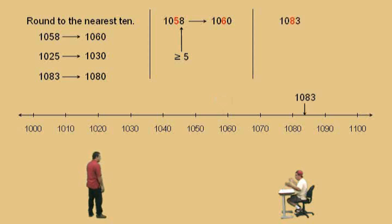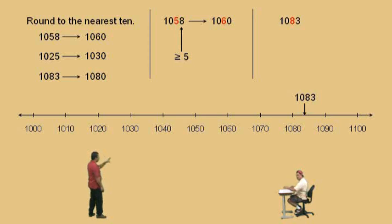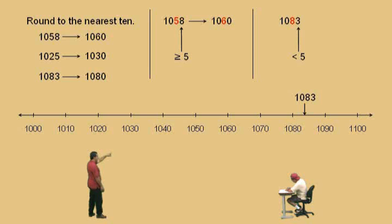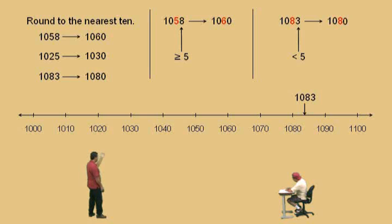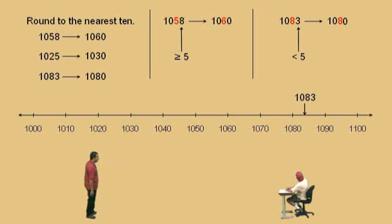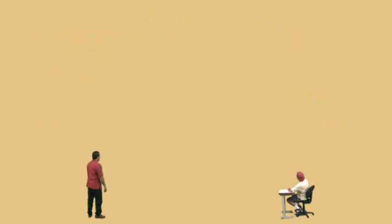Okay, let's do another one. Let's go back to 1,083. Notice the eight is highlighted in red because that's the tens place — the digit we're rounding to. We look at the next digit, which is a three, which is less than five. In this case, we do not change the eight, we leave it as an eight. The digits to the left we replace with 1 and 0, and to the right you replace with a zero again. That's your answer: 1,080.